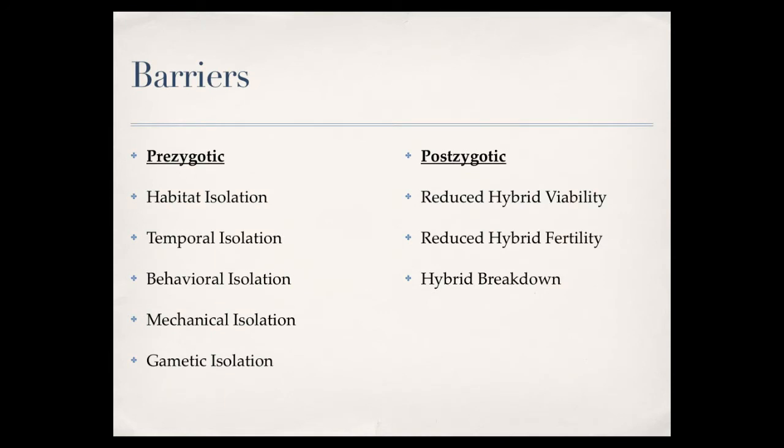For pre-zygotic barriers: habitat isolation is where two organisms are geographically separated — their habitats are different so they don't interact and can never mate. Temporal isolation is where animals mate at different times; for example, one set of frogs mates in May while another mates in June — they will never mate with one another. Behavioral isolation involves mating dances in birds, where two birds might technically be able to mate but have adapted to the particular mating rituals of their own species and will not mate with the other.